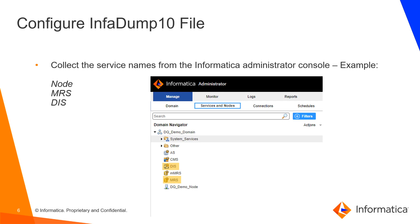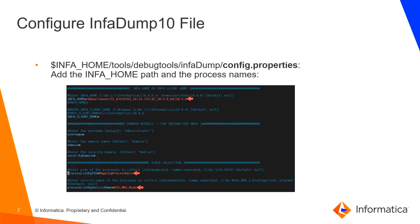For the node process, we will refer to it as node in the Infodump config file. Now that we have the service names, we should edit the config.properties file. In the screenshot, I have added the info home path and also the service names as they are displayed in the admin console. As mentioned before, we use node here instead of the node name.